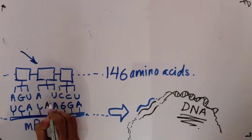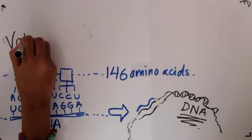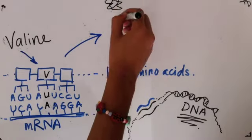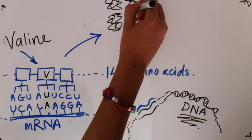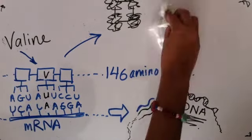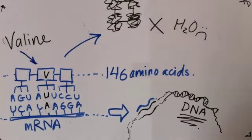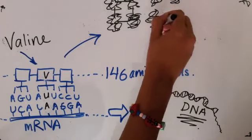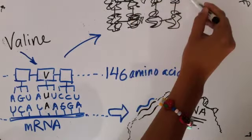Instead of glutamate being coded, valine is coded instead. So when the polypeptide chains curl up and join to form a hemoglobin molecule, one of the sites that should be hydrophilic and interact with water molecules becomes hydrophobic instead, so it wants to interact with other hemoglobin molecules.